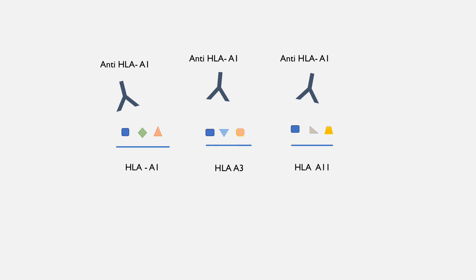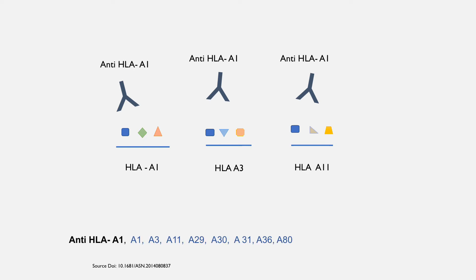So one antibody can bind to a group of antigens. This group of antigens is called a common reactive epitope group (CREG). For example, anti-HLA A1 can bind to A1, A3, A11, A29, and all antigens in that group.